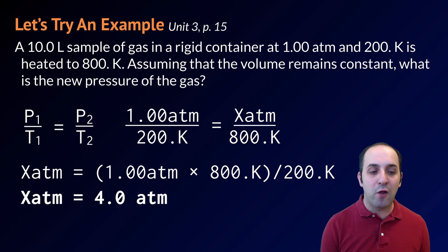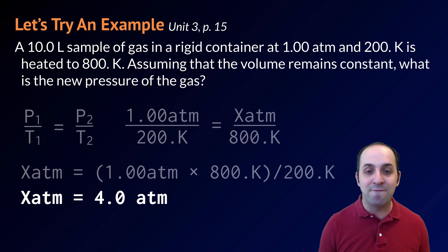Doing this math, I get a final answer of 4 atmospheres for my final pressure, which is exactly what we should expect given that we've quadrupled our initial temperature to our final temperature. We should expect that our initial pressure should also quadruple as well.